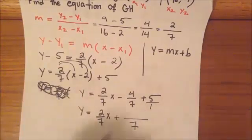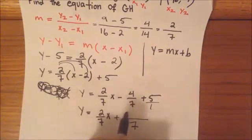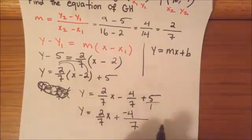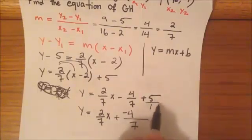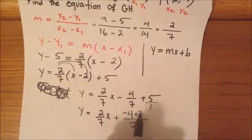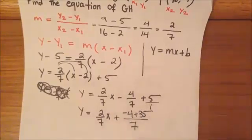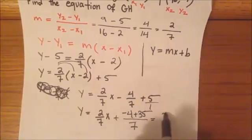So, 7 times what gives us 7, 7 times 1 gives us 7, so that means 4 times 1 is just going to be negative 4, and 1 times what gives us 7, 1 times 7 gives us 7, so we have to multiply 5 times 7, which is going to give us positive 35. And now we can get 31 over 7, since the 4 is negative, we have to subtract.